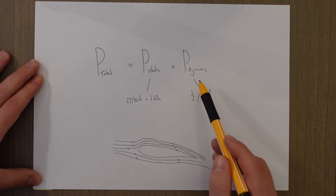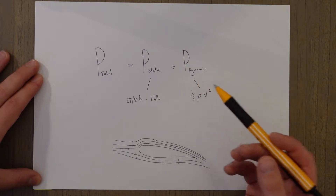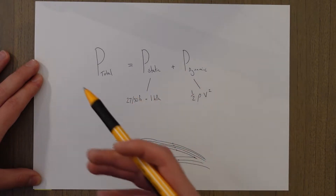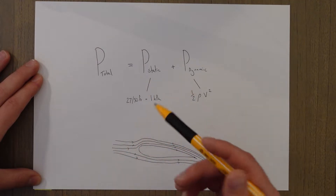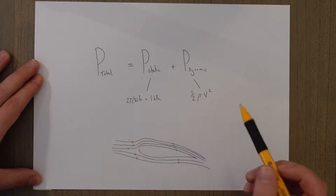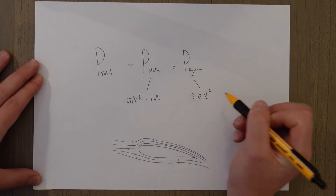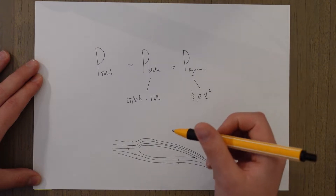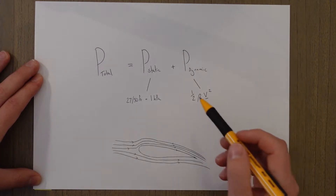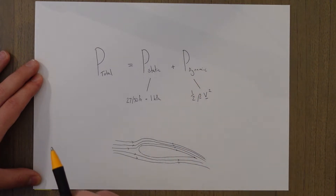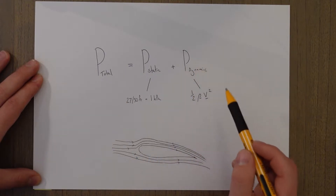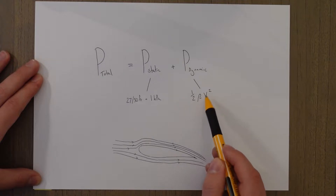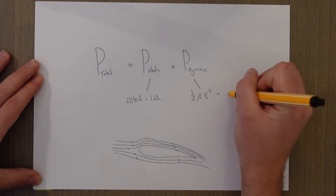The dynamic pressure is generated when an object moves through the air or the air moves over an object, and the amount of pressure is dependent on the density and the speed of this air. The faster we go, the more dynamic pressure we experience, and the more dense the air, again, the more dynamic pressure we would experience. The formula for dynamic pressure is a half rho v squared, and it's normally given the symbol Q.